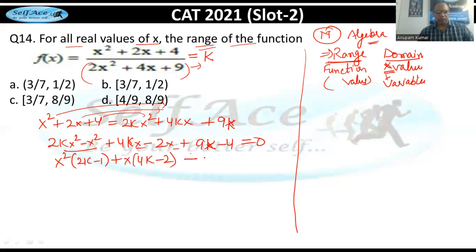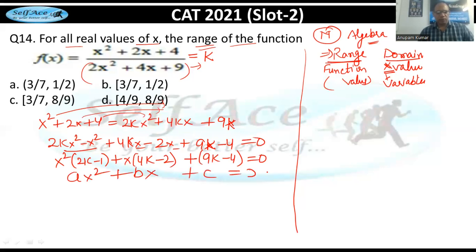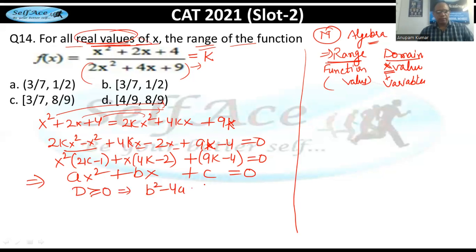This is a quadratic equation of the form ax²+bx+c = 0 where a = 2k−1, b = 4k−2, c = 9k−4. Since we need real values of x, the discriminant D = b²−4ac must be greater than or equal to zero.